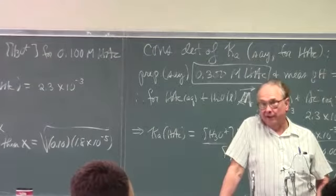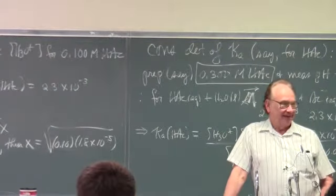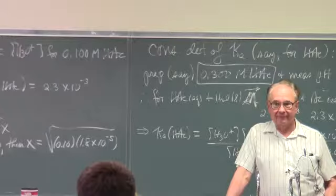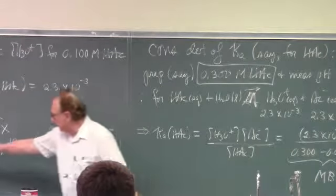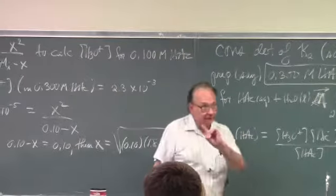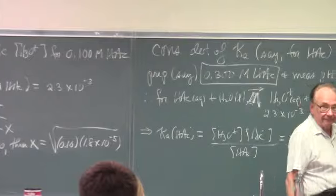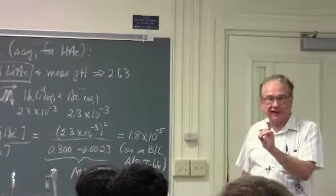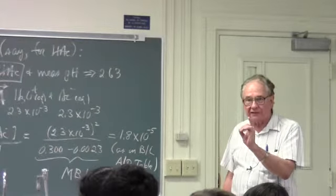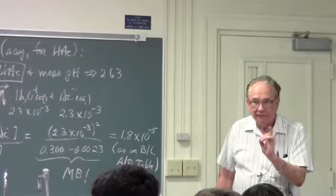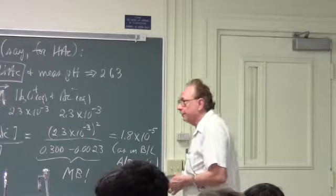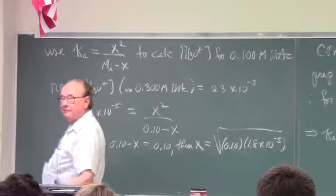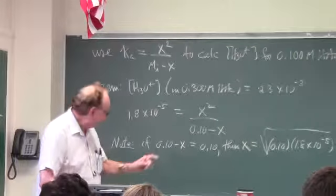Students often say, well, of course I believe it. You wrote it on the board. Is this true? Is this possible? Don't forget significant figures. Is it possible that 0.10 less x, which is the hydronium ion molarity as well as the acetate ion molarity, is still equal to x? If x is smaller than 0.005, then this is true.